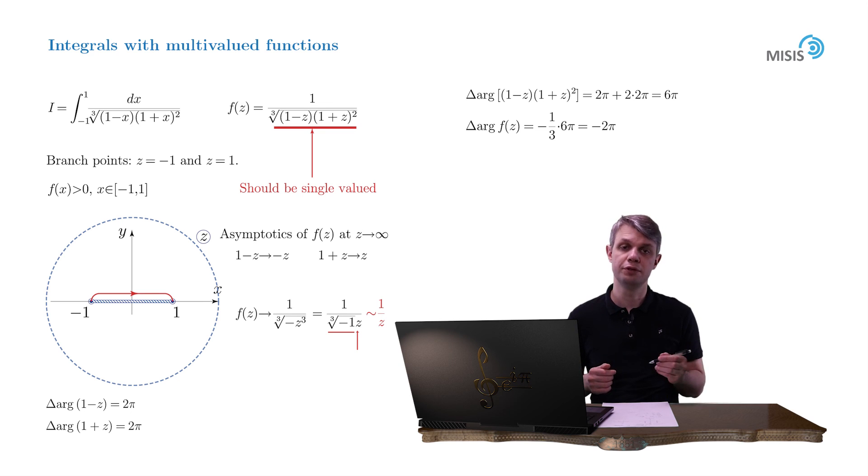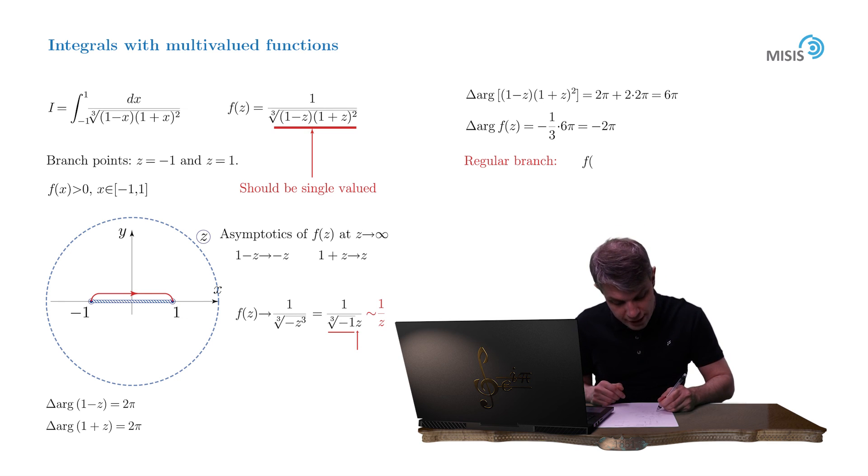But pay attention to what we've just done. By equalizing this contour integral to the initial one, we imply that our cubic root assumes its arithmetic values at all the points on the upper bank of our branch cut. This is essentially the fixation of the regular branch of our multivalued function. So this is the rigorous condition: f(x+i0) stays positive if x belongs to the segment from negative 1 to 1.